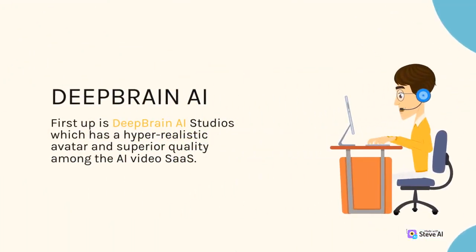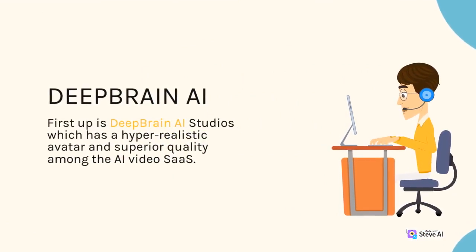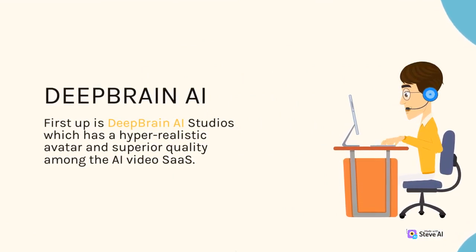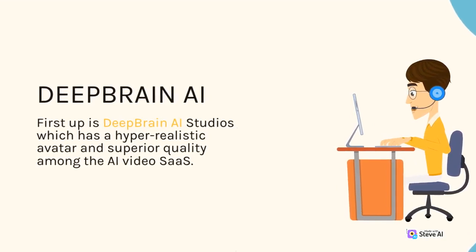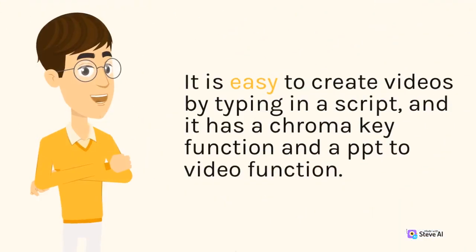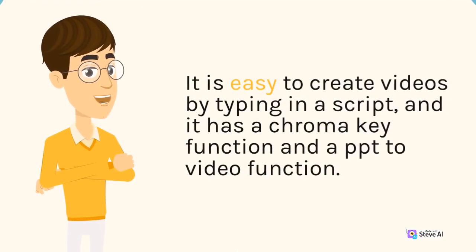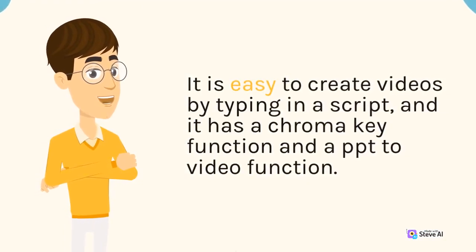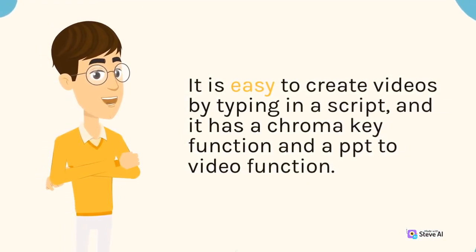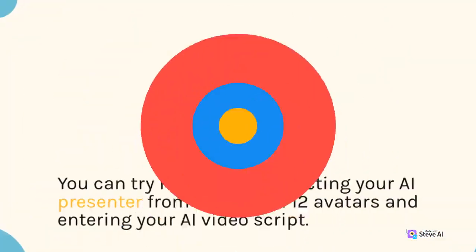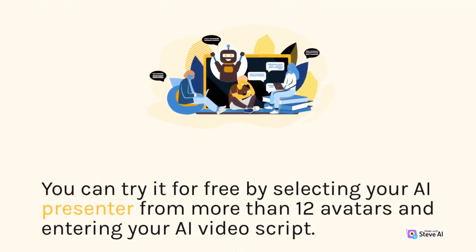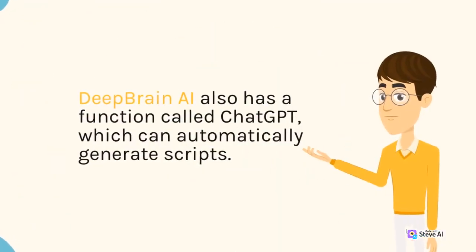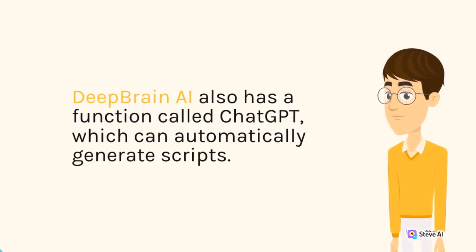First up is DeepBrain AI Studios, which has a hyper-realistic avatar and superior quality among AI video SaaS tools. It is easy to create videos by typing in a script, and it has a chroma key function and a PPT-to-video function. You can try it for free by selecting your AI presenter from more than 12 avatars and entering your video script. DeepBrain AI also has a function called Chat, which can automatically generate scripts.